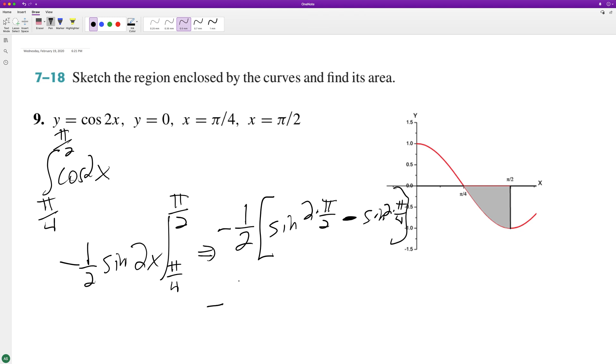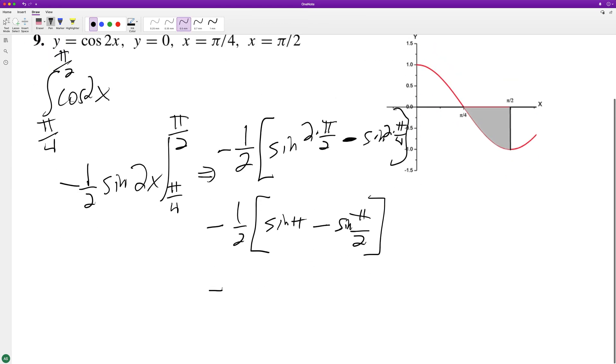So what we end up with is negative one-half sine of pi. This is equal to—sine of pi is equal to 0—and then minus sine of pi over 2, which is equal to just 1.